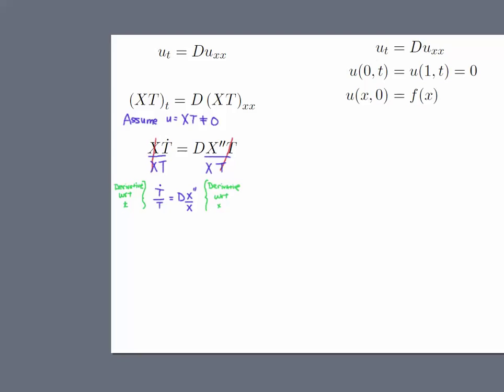Once we divide by it, we will simplify and we get T dot over T equals the diffusivity times X double prime over X. Notice that on the left-hand side we have all derivative with respect to T equal to something where we have all derivatives with respect to X. Now there's only one way that that can happen, and that is if both of those are equal to a constant.